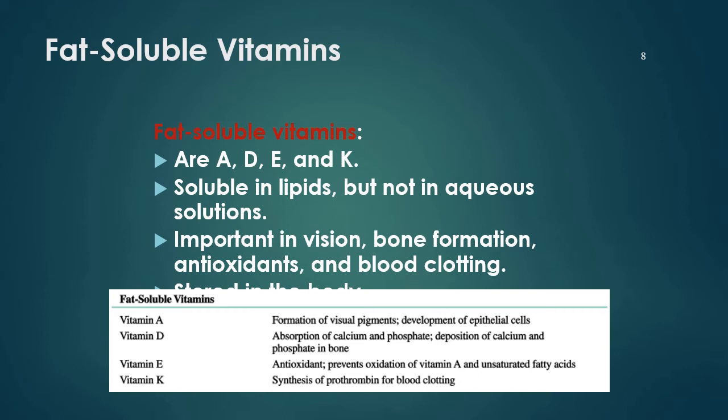Another fat-soluble vitamin is vitamin D. Vitamin D facilitates the absorption of calcium and phosphate, and helps the deposition of calcium and phosphate in bone. Usually when you buy calcium tablets or calcium supplements, they come with vitamin D, because vitamin D aids the absorption of calcium.